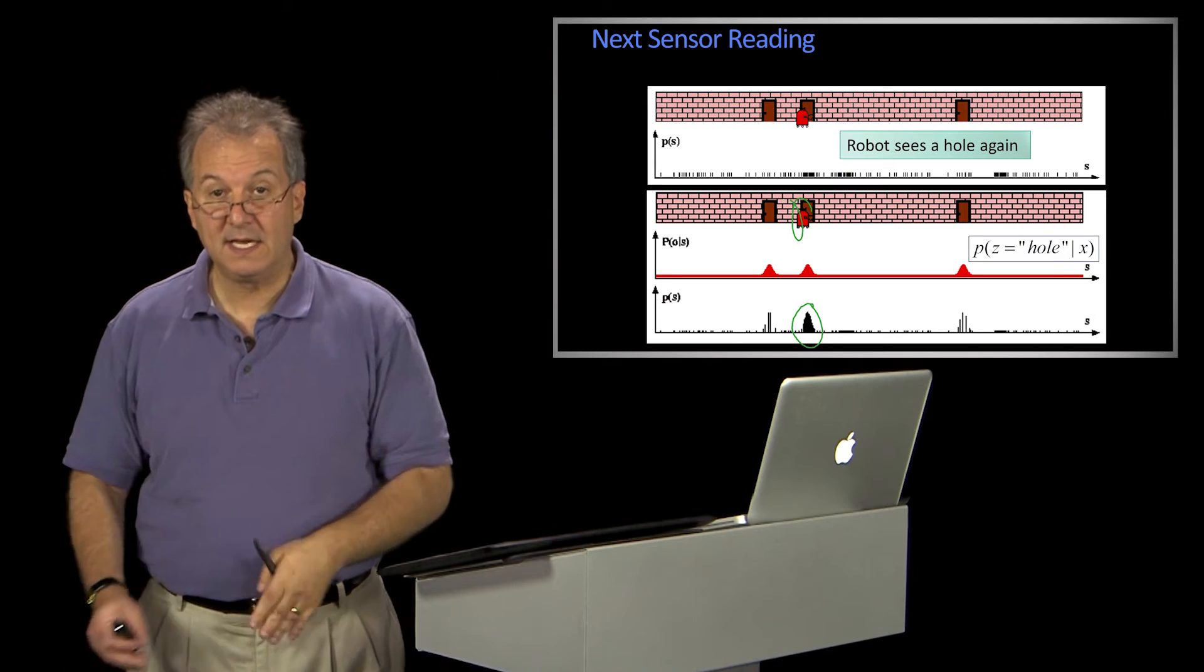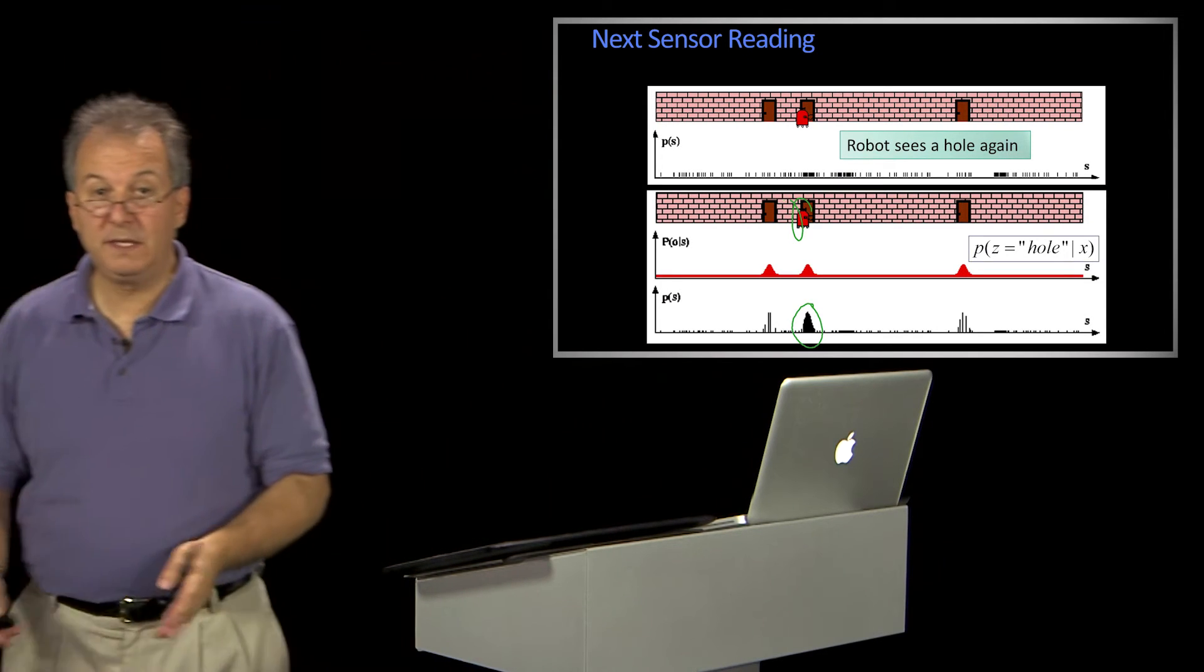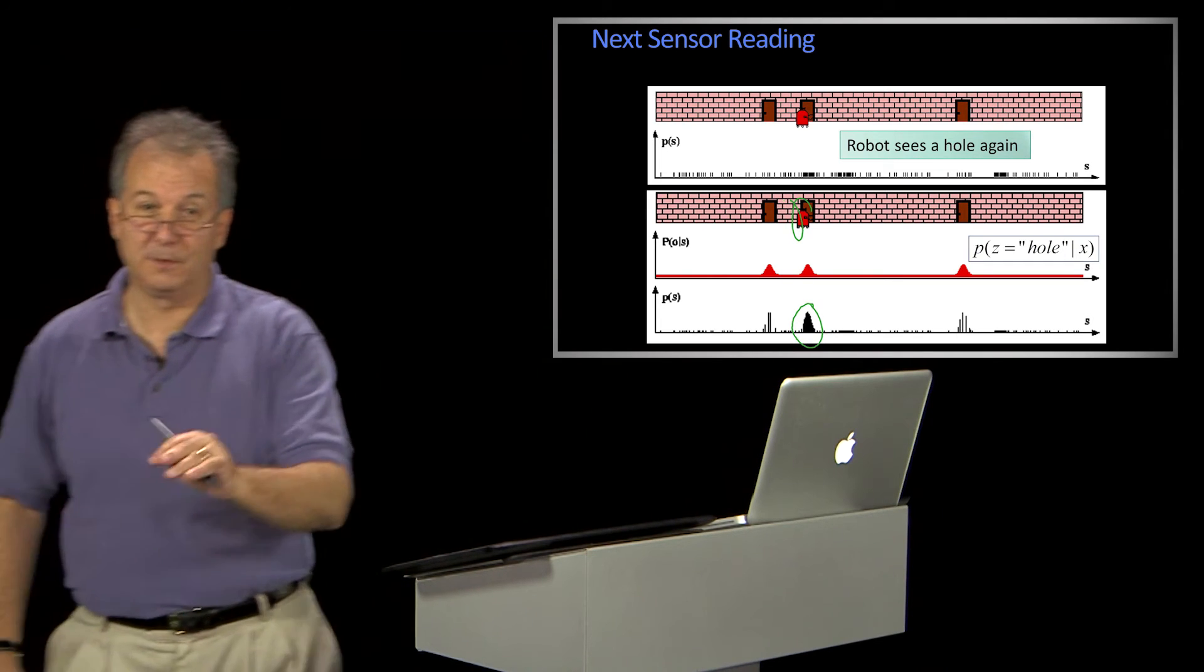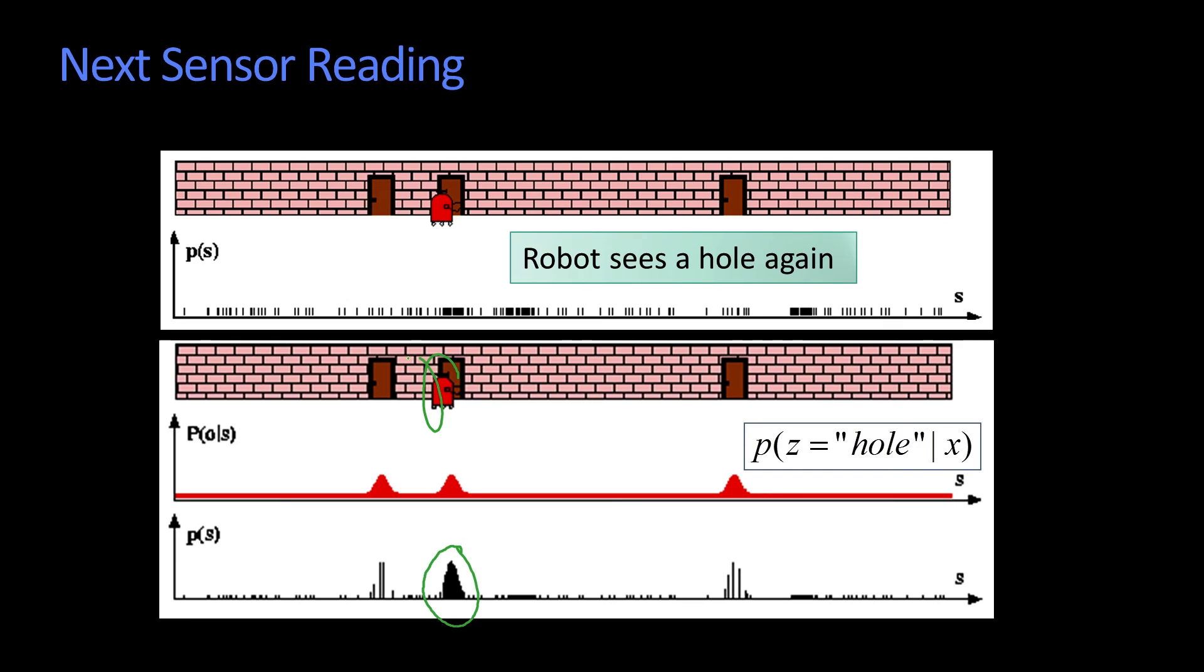And the reason is it saw a hole, it took a meter, it took a step of two meters, saw another hole. Megan's really hoping I don't go another two meters, I won't. And just that amount of information is enough for it to have a pretty good belief about where it is, okay?